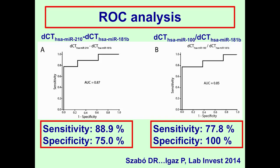By ROC analysis, two combinations of microRNAs showed the highest sensitivity and specificity, but these are not high enough at present for introduction into clinical practice. We suppose that by sample size extension, these might turn out to be promising biomarkers. What are the problems with circulating microRNA studies?